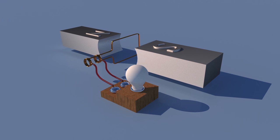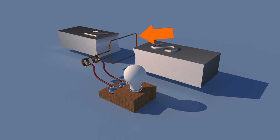In this simplified generator, this loop of wire is the conductor, and the magnetic field is provided by this magnet. The relative motion comes when the conductor is rotated between the poles of the magnet.